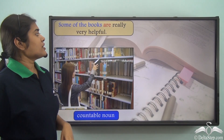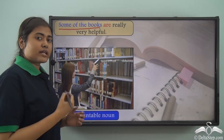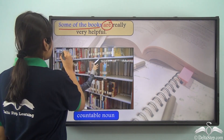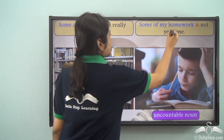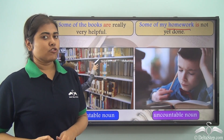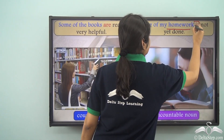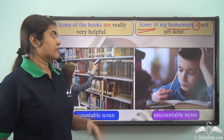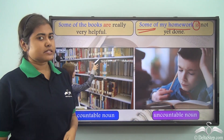'Some of the books are really very helpful.' Here 'books' is a countable noun, so we use the plural verb 'are.' But if we say 'Some of my homework is not yet done,' homework is an uncountable noun, so we use the singular verb 'is.' Even though we say 'some,' it does not change the verb — even with 'some of my homework,' the verb still remains singular.